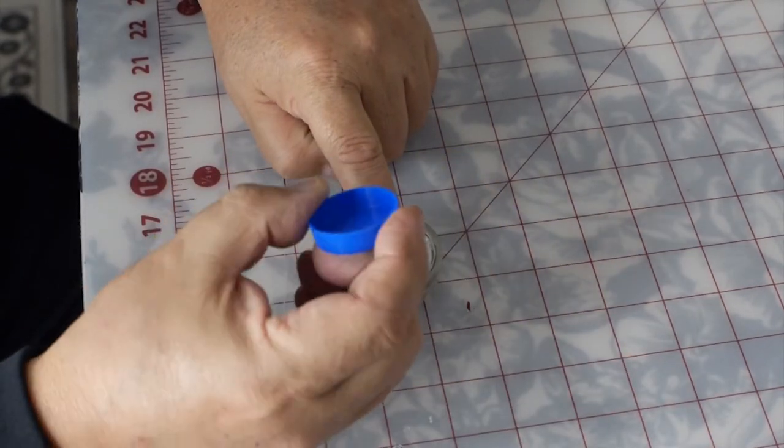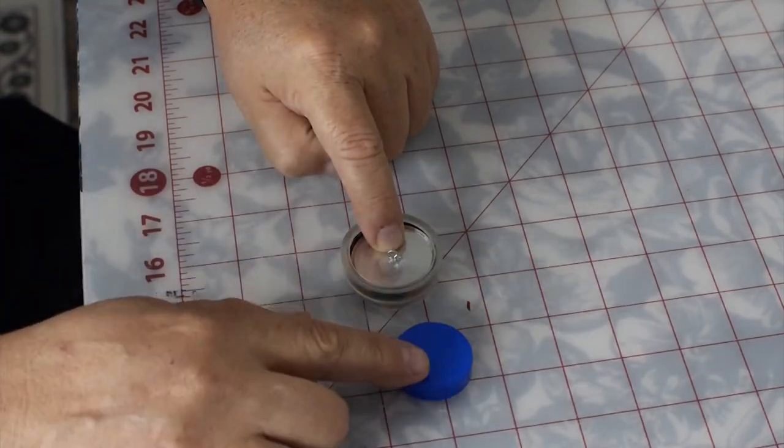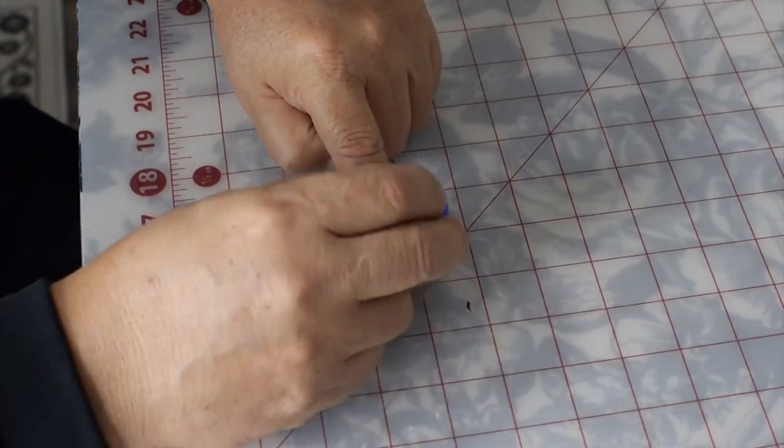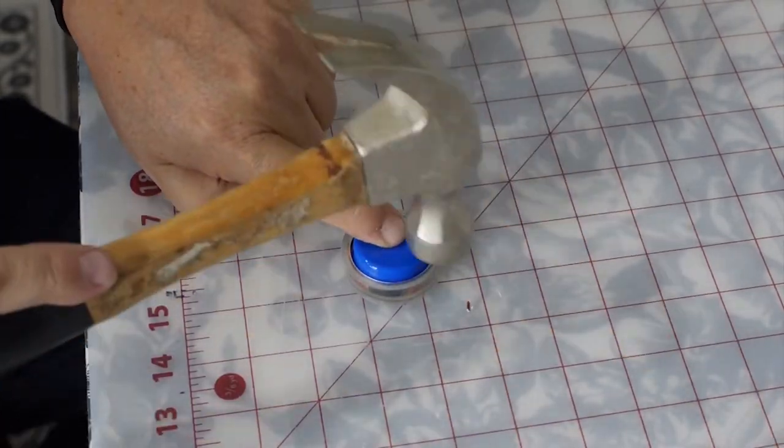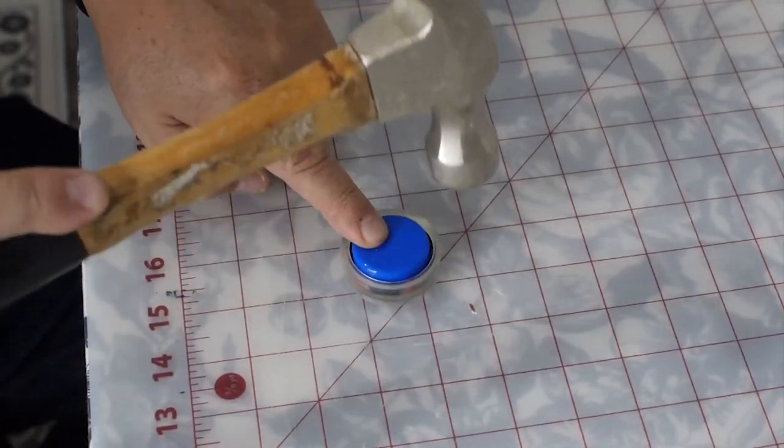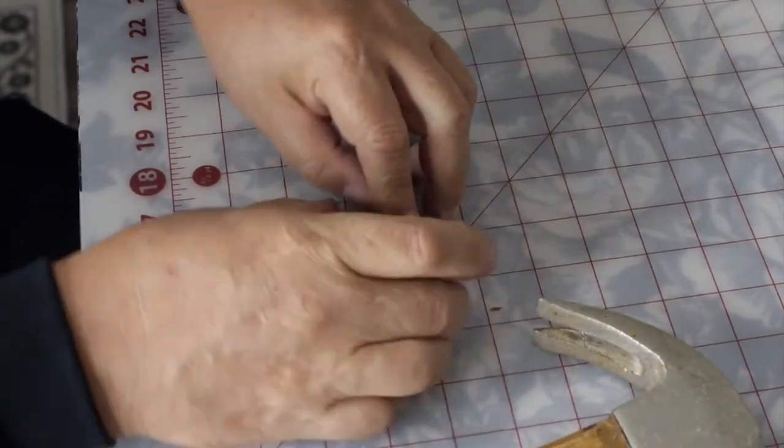Now that we have the fabric correctly placed in, take the blue plastic cup and flip it so the edges are face down. Press down and press down and tap it in with a hammer. Not too hard. Lightly tap around the button. Go all the way around.